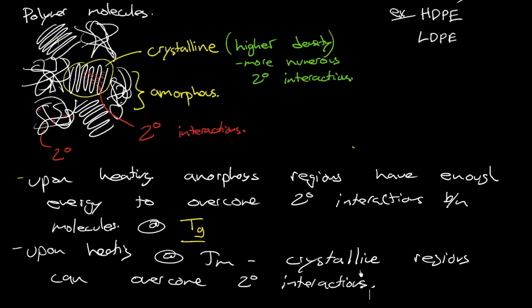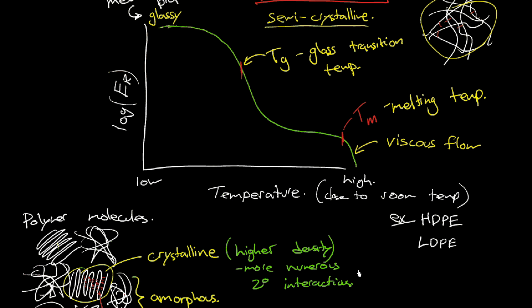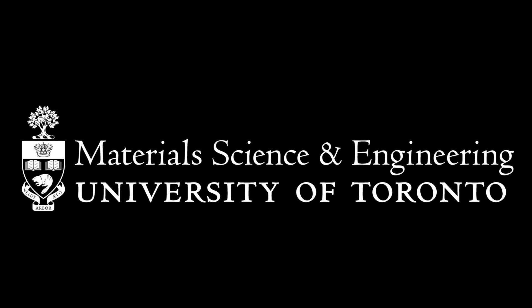So now we understand why there's a need with polymers for both a Tg, glass transition, and a Tm, melting temperature. Thank you very much for being here.